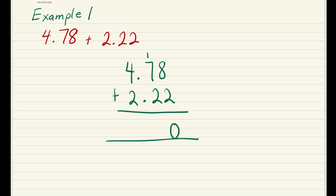1 plus 7 is 8 plus 2. If it says 10, we'll only put a 0 and carry the 1 to the next part. We have to remember to bring the decimal point down. 1 plus 4 is 5, 5 plus 2 is 7. So as you can see, our answer is 7.00, and you remember from before I explained to you that 7.00 is also the same as 7. So for our question 4.78 plus 2.22, the answer is going to be 7.